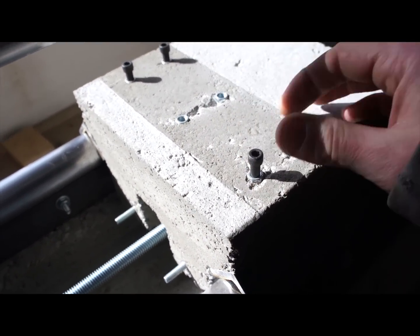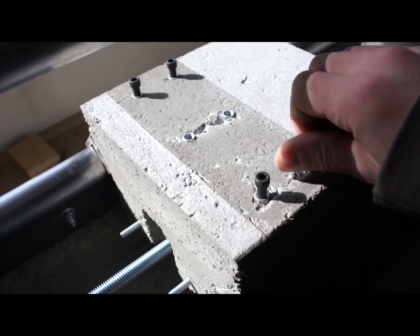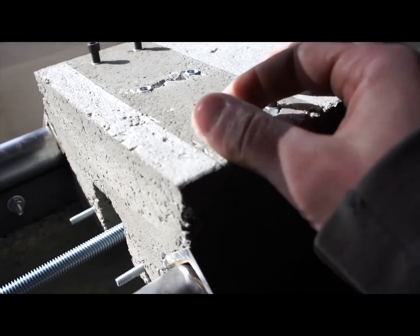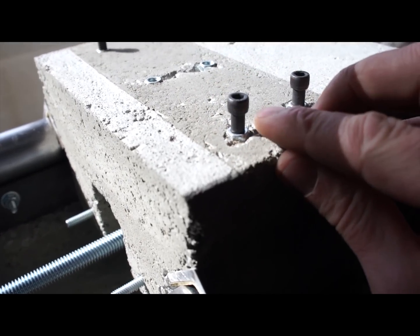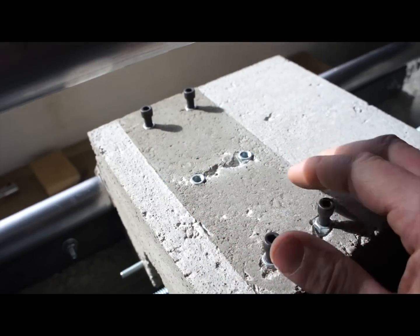The coupler nuts that we cast in there worked perfectly. I sealed the bottom with hot glue so I have all the thread, which is going to be important because we're going to have a piece of quarter inch aluminum on here and then our top cross slide.